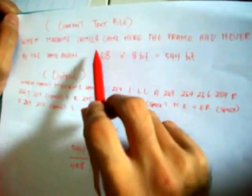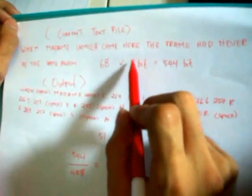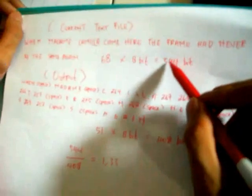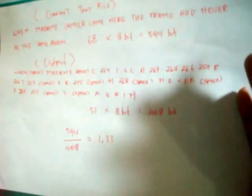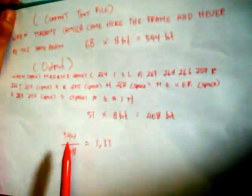Now we can count the total bits of the original text file versus the compressed output file. The original has 68 characters multiplied by 8 bits equals 544 bits. The output file has 41 characters multiplied by 8 bits equals 408 bits. We can see the compression result: 68 down to 41. The compression ratio is 544 divided by 408, which gives 1.33.